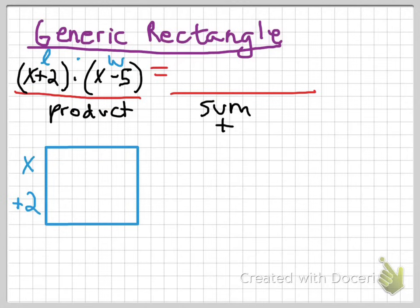If the width is x minus 5, then x minus 5 is the width on the bottom. And what we're going to do is we're just going to split this up into four sections. Let's make that look a little nicer. Split this up into four sections. And we're going to take those sides, those x plus 2s, x minus 5s,